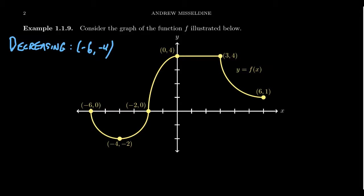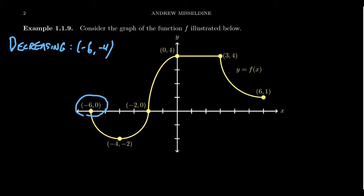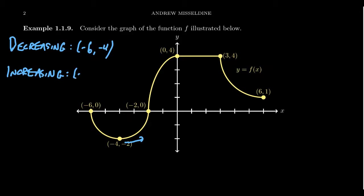Notice that when I wrote the interval (−6, −4), I used parentheses rather than brackets. That's because we're not including negative 6 or negative 4 in the interval. At negative 6, there's nothing to the left, so we can't confirm it's decreasing there. At negative 4, the function was decreasing to the left but will be increasing past negative 4 — it sits on the fence, neither increasing nor decreasing. So the places where monotonicity switches are not included. Once you get past negative 4, the function starts to increase, getting bigger and bigger until you hit 0. So the function is increasing from negative 4 to 0.